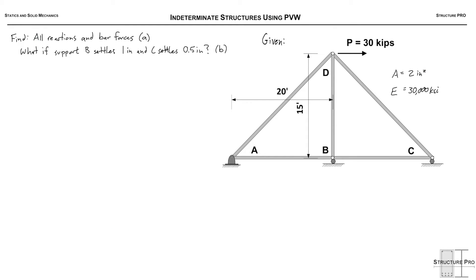Alright structure pros, right here we're going to be doing an example on indeterminate truss. We're going to be analyzing it using the principle of virtual work. So we're asked to find all reactions and bar forces. That's from the 30 kip load, P. That's part A.